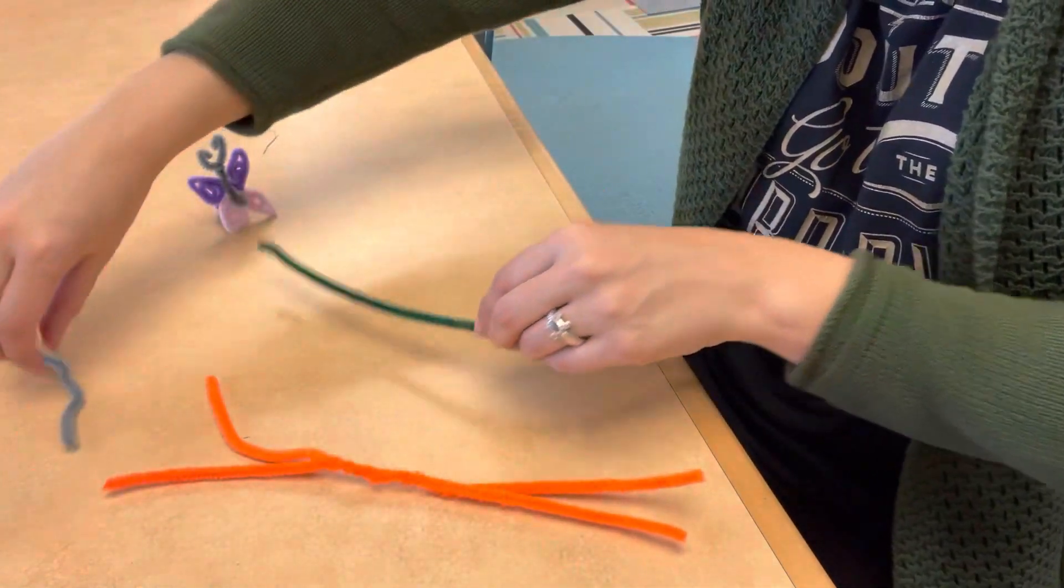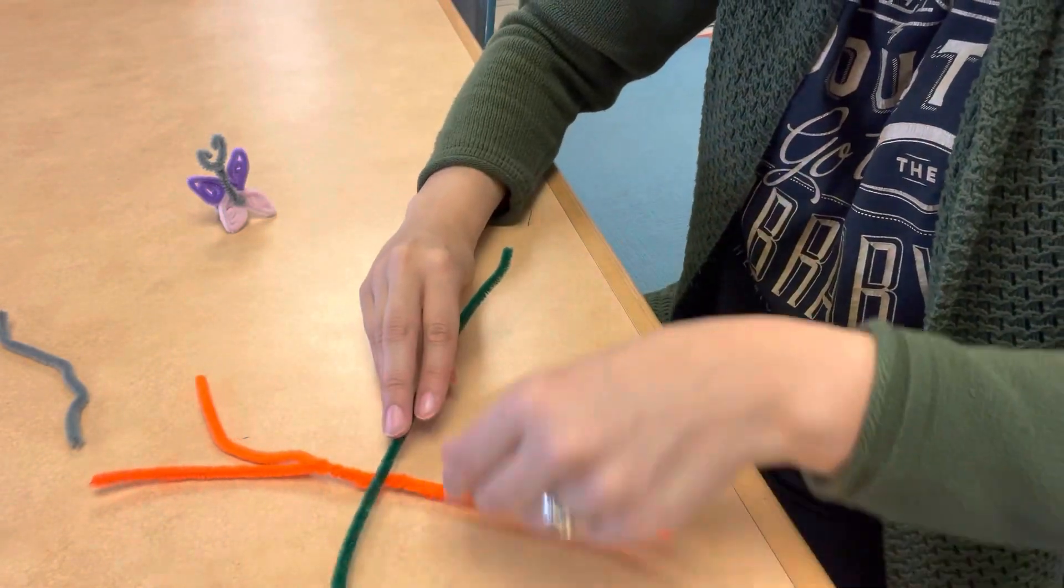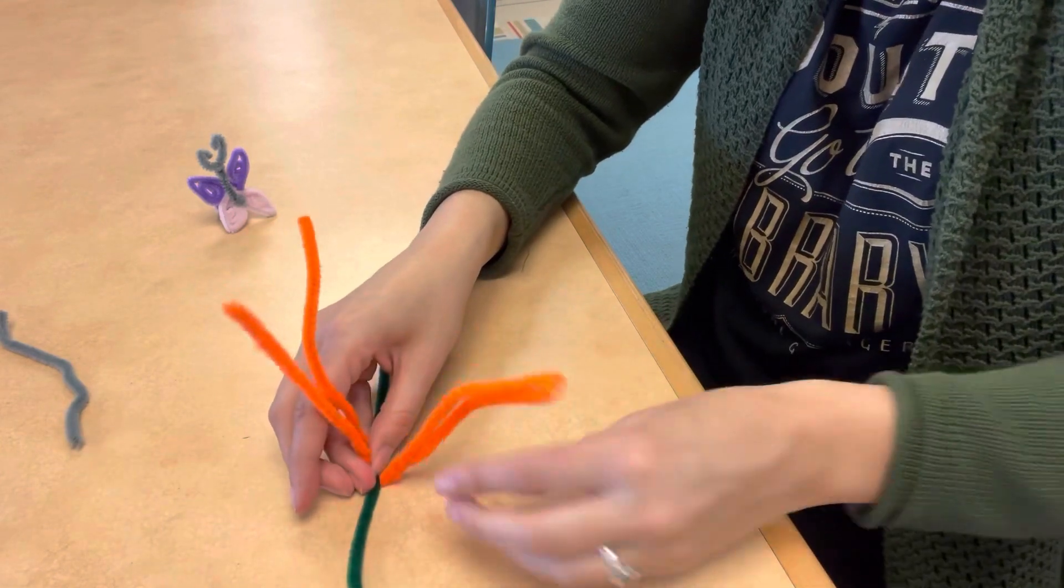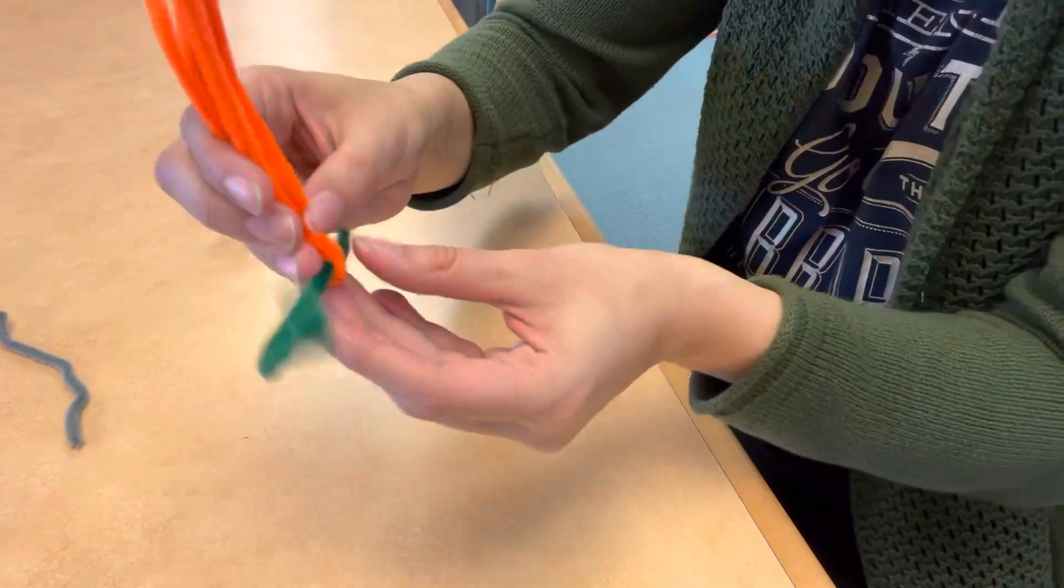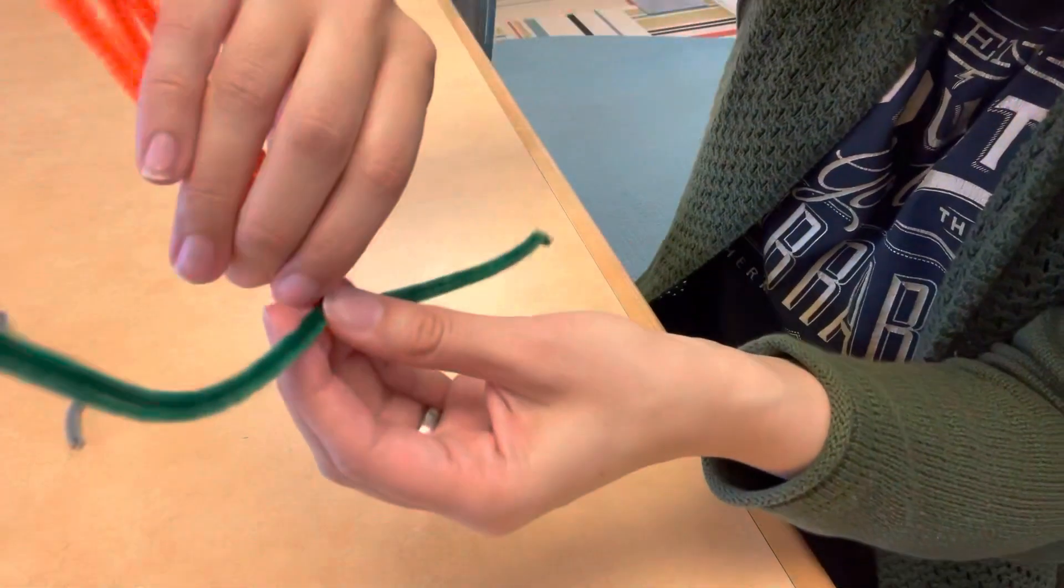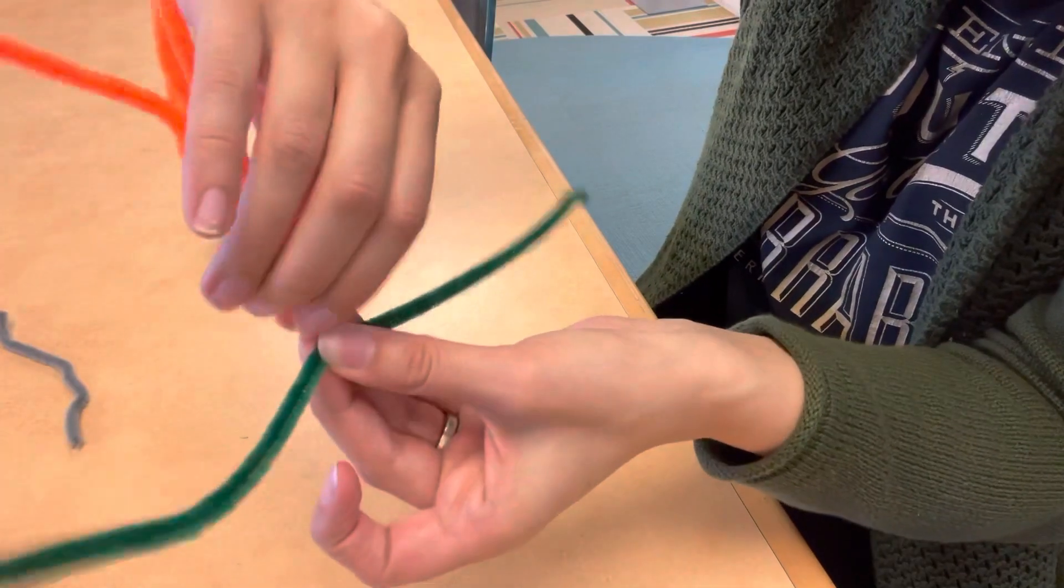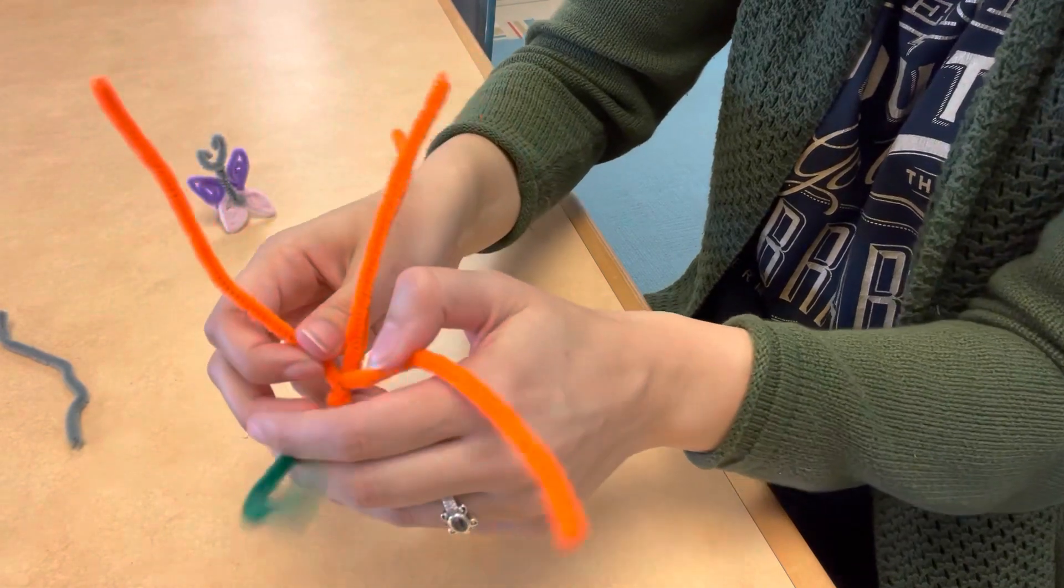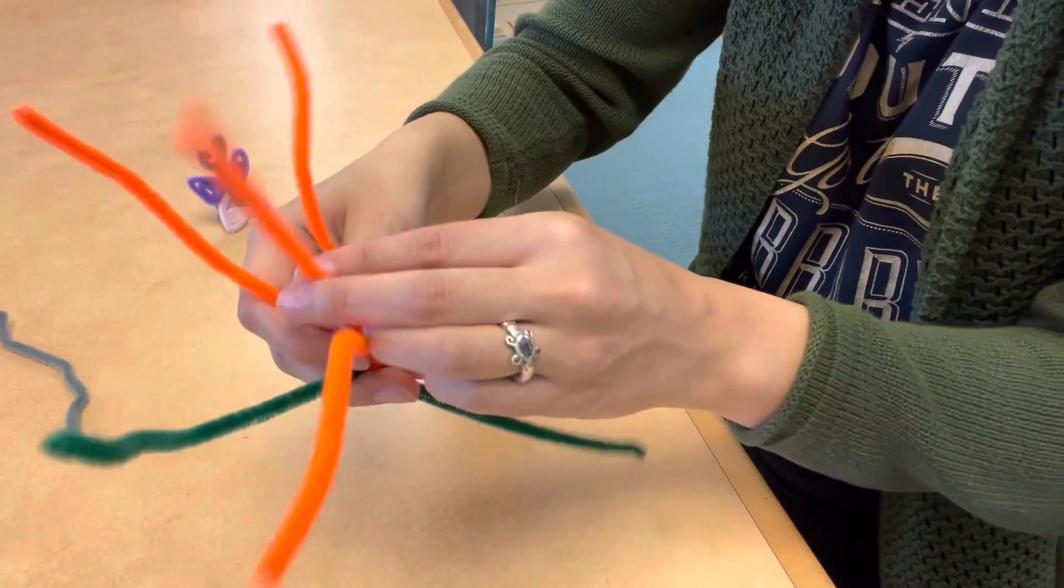Then you're going to take another long piece of pipe cleaner and put that right in the center. You're going to twist the other ones right around it. So one, two, three. Then you're going to spread those ends out. Those will be the wings.